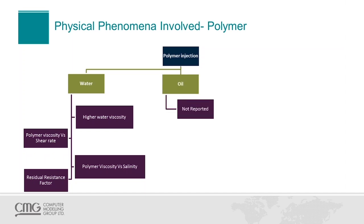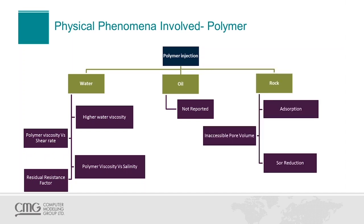The oil phase — literature does not report anything being affected in this phase. But on the rock, we have three different and important effects. Absorption is the first one: when you inject polymer, particles get trapped on the surface of the rock up to a maximum absorption. If you stop injecting polymer and begin injecting fresh water, that fresh water tends to remove those particles again until we reach the residual absorption. If the residual absorption is less than the maximum, the process is reversible, and we can model both cases in our simulators.